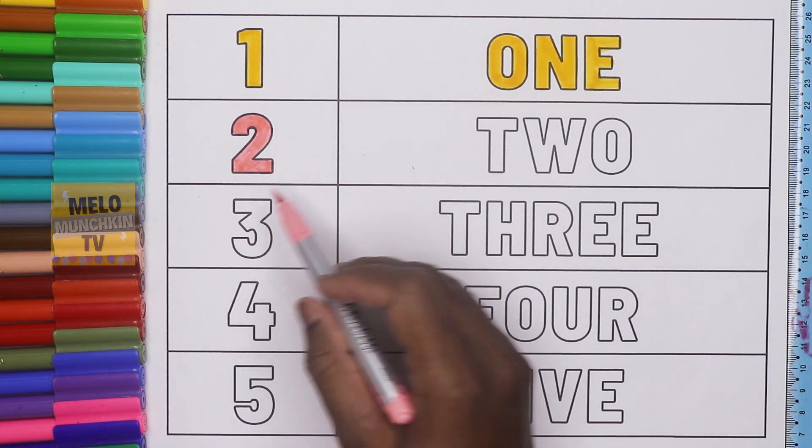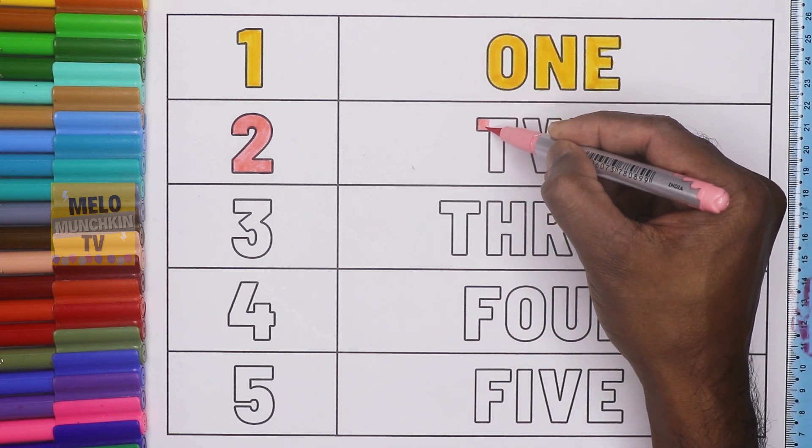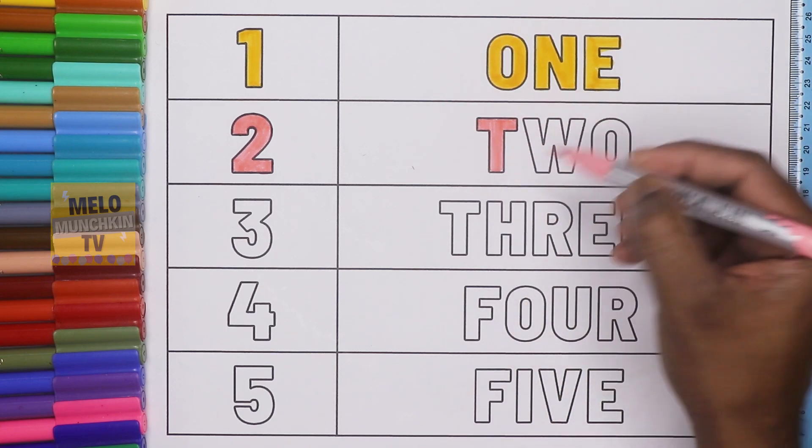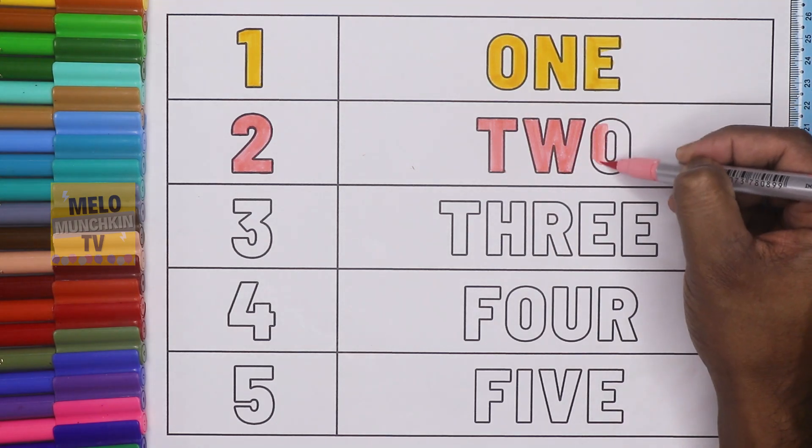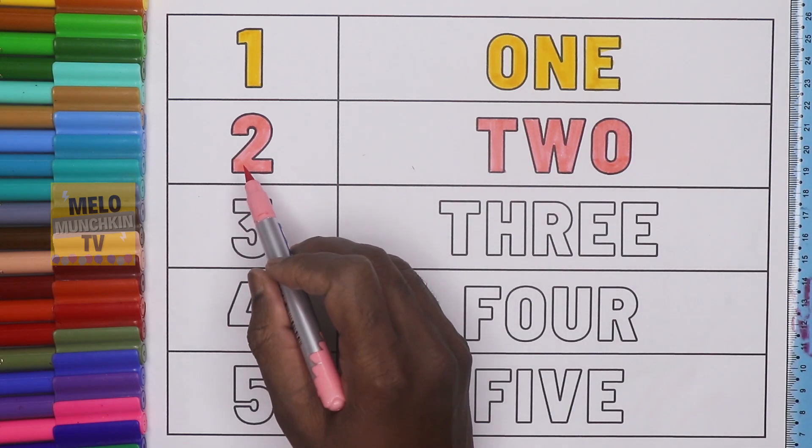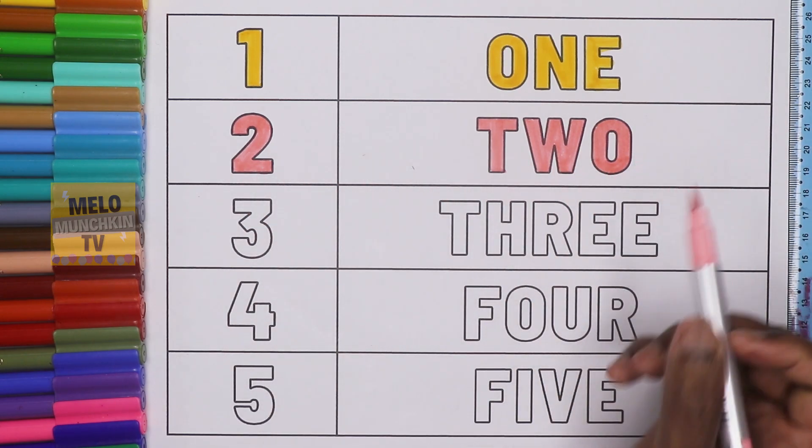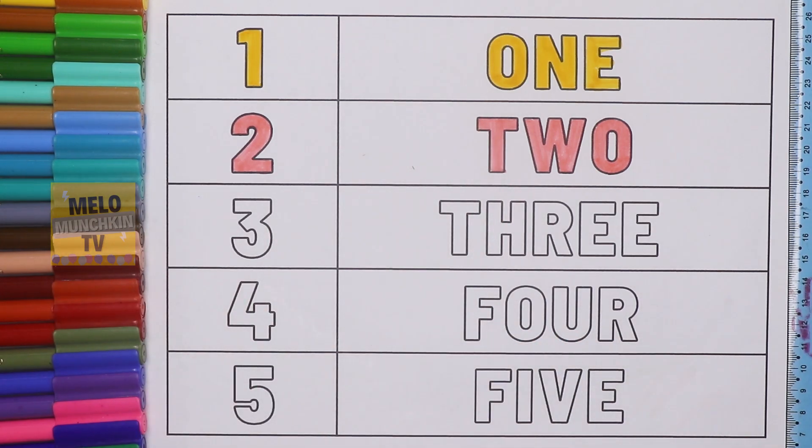So this is 2 and the spelling is T-W-O. Let's color these. T-W-O, 2, T-W-O. This is 2 and this color is light pink color.